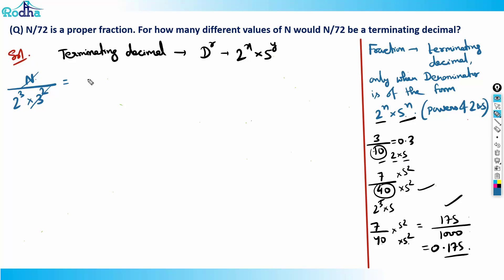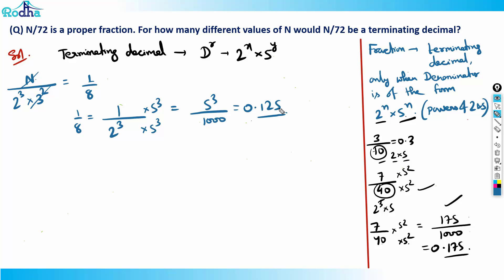n must cancel 3² so that only something like 1/8 is left, which is terminating because 8 = 2³. I can multiply by 5³/5³ to get 125/1000 = 0.125. So 2^x or 5^y or both can be present — either one is fine — but the denominator must not contain any other prime factors.